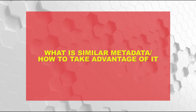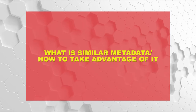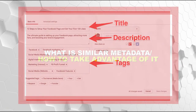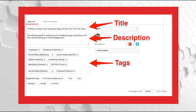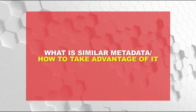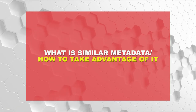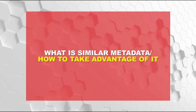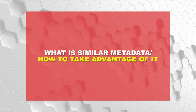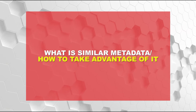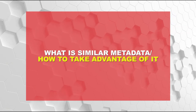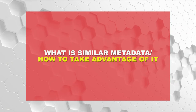Now let's talk about similar metadata and how to take advantage of it. Metadata includes your title, description, tags, and subtitles — everything you fill in when uploading your videos. In my opinion, the secret to YouTube is similar metadata: having consistent metadata across all your YouTube videos. The more similar your titles, tags, and descriptions are, the better your chances of getting into the suggested feeds within your own videos.